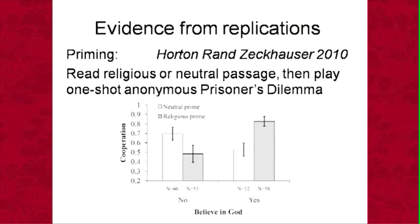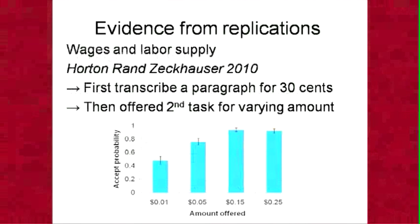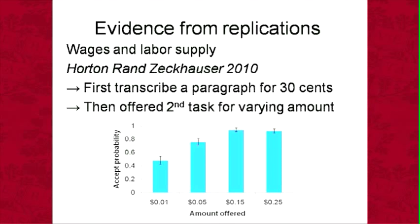On basic wages and labor supply: we had people transcribe a paragraph for 30 cents, then offered a second task for varying amounts. At 25 cents, basically everyone accepted; at 15 cents, basically everyone; at 5 cents, significantly fewer; at 1 cent, still half the people accepted. From this John calculated the reservation wage of 14 cents per hour. This was the field study where we manipulated wages and observed labor supply decisions in what looked like a regular work task.